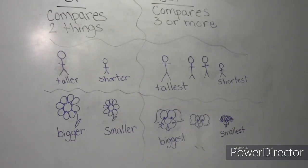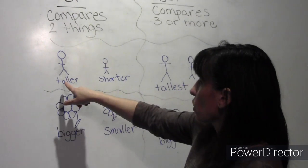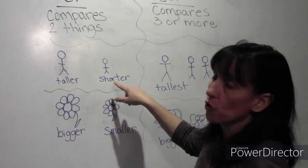On the board, we have some more words that compare. So if I was standing next to Brandon, Brandon would be taller and I would be shorter.